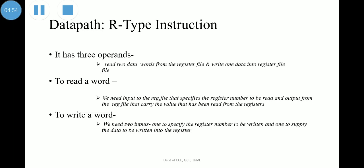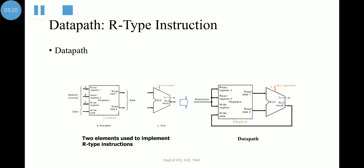To write a data word we need two inputs: one to specify the register number to be written and one to supply the data to be written. The register file always outputs the contents of whatever register numbers are on the read register inputs; writes are controlled by a write control signal that must be asserted at a clock edge. In total we need four inputs — three for register numbers and one for data — and two outputs both for data. The register number inputs are five bits wide to specify one of 32 registers, while the data input and two data output buses are each 32 bits wide. The ALU takes two 32-bit inputs and produces a 32-bit result as well as a one-bit zero signal.